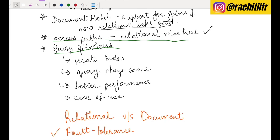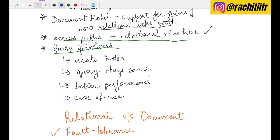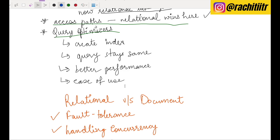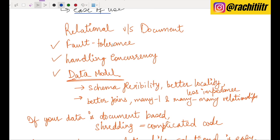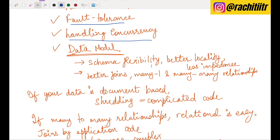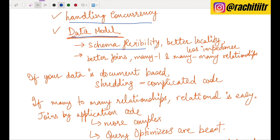In relational databases, you can ask for granular data without worrying about access paths. Query optimizers are really great — create an index, get better performance, and your query stays the same. If you have scalability issues, figure out your query patterns, design your database model, create indexes, and your queries stay the same. In summary: document data models offer schema flexibility, better locality, and less impedance mismatch, while relational databases win by providing better joins, many-to-many, and many-to-one relationships.